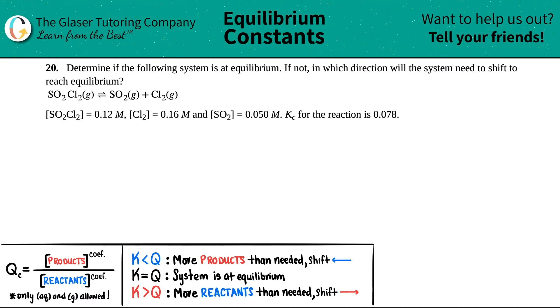Number 20: Determine if the following system is at equilibrium, and if not, in which direction will the system need to shift to reach equilibrium. They give us this equation and the concentrations, and the Kc for the reaction is 0.078. So the first thing I'm going to do is write this a little bit bigger so we can work with it better.